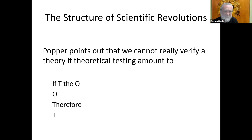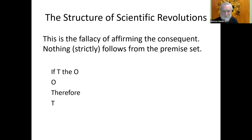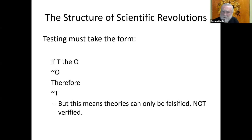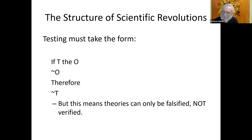We've discussed affirming the consequent earlier. If T then O; O — nothing strictly follows from that conjunction. So this cannot be how science proceeds, according to Popper. It's not proceeding by confirming theories. He thinks scientific testing must take the form: if T then O; not-O, therefore not-T. If my theory is true I should have observational result O; I don't have O, so my theory must not be true. The real engine of science is not verification but falsification.